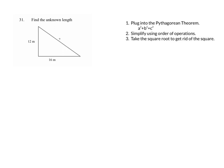Okay, for problem 31, we have find the unknown length of a right triangle. We want to plug into the Pythagorean theorem. Remember that the Pythagorean theorem is a squared plus b squared equals c squared. From there, we are going to simplify using order of operations and then take the square root to get rid of the square.